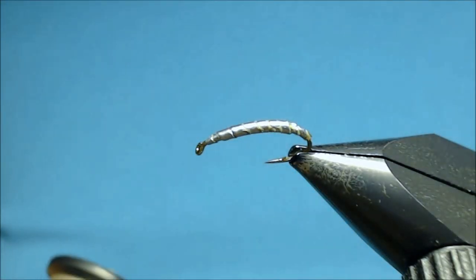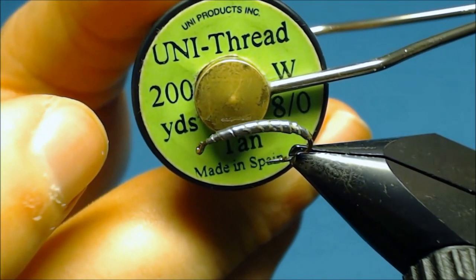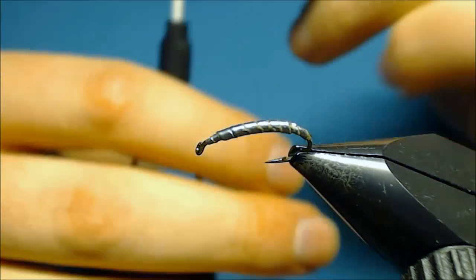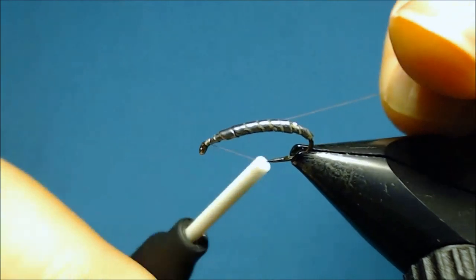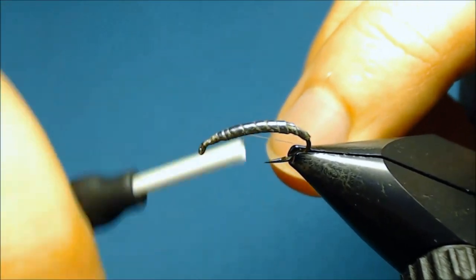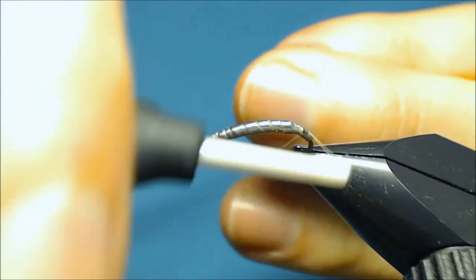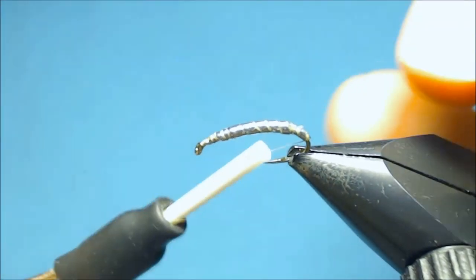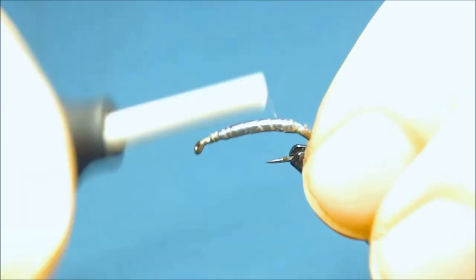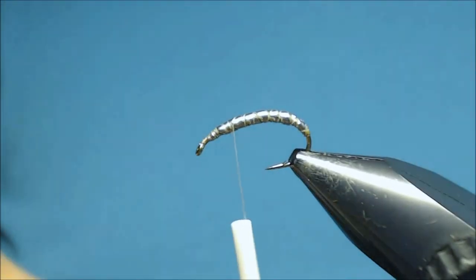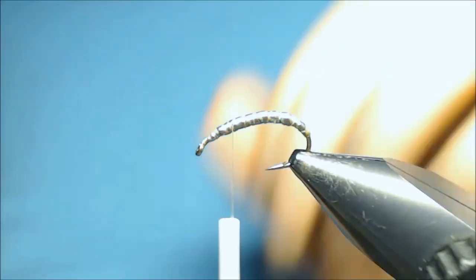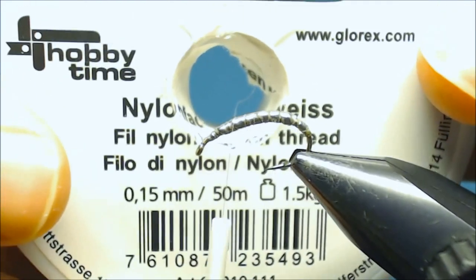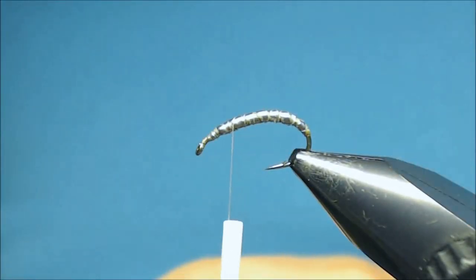The thread I will use is 8.0 Uni in tan but you can use any color or any thread that you like. So we'll start by putting down just a layer of thread starting at the eye, securing the lead a little. Then cut off the rest piece. Some turns to secure. And now we'll tie in the first material. This is some nylon thread. This is 0.15mm.